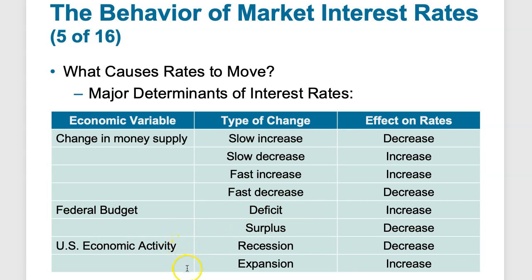Regarding U.S. economic activity: a recession decreases rates, as happened in 2000 to 2003 and 2008, mostly because there's less demand for money and the Federal Reserve pushes rates lower by decreasing them on treasuries. Economic expansion generally leads to an increase in rates as there's more competition for money and more inflation. These are the most likely scenarios, though the opposite can happen due to many other factors.